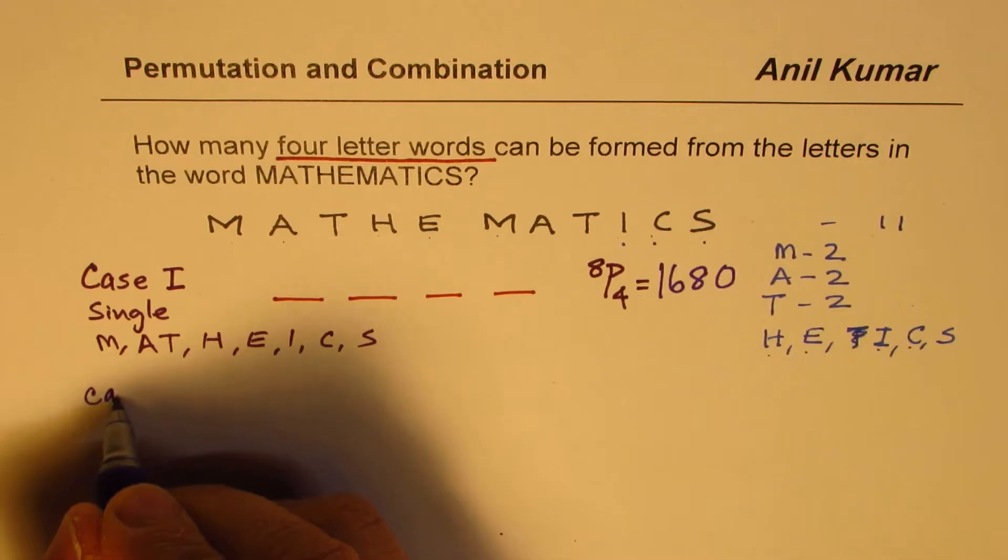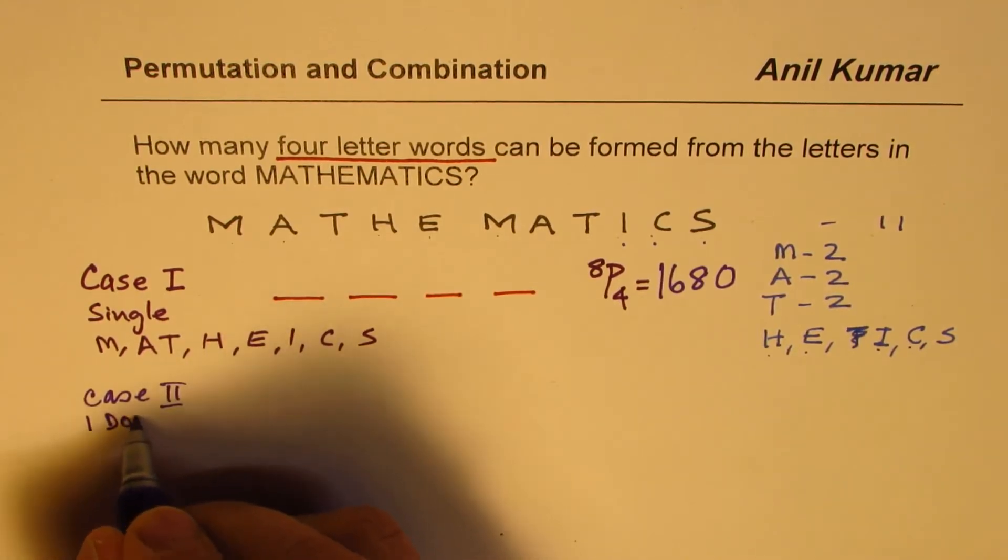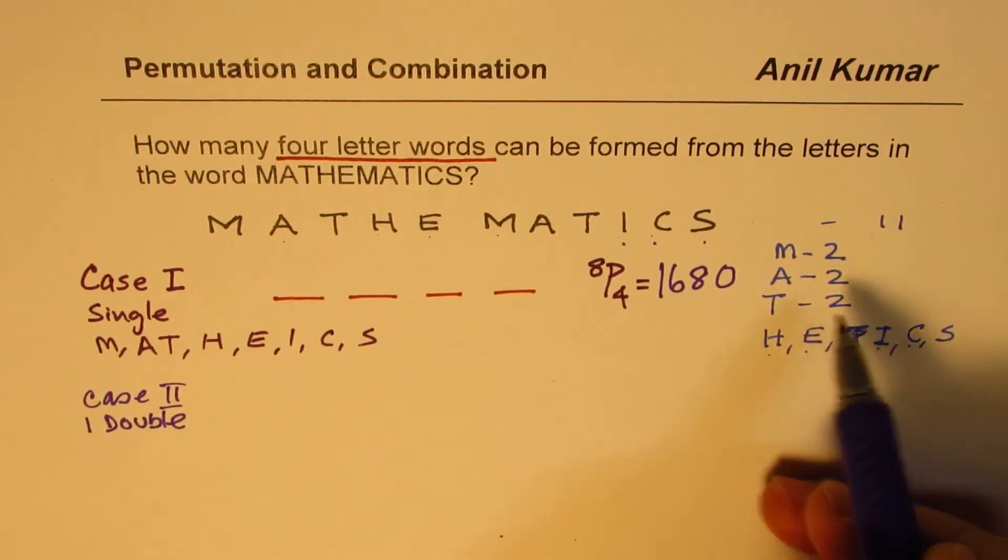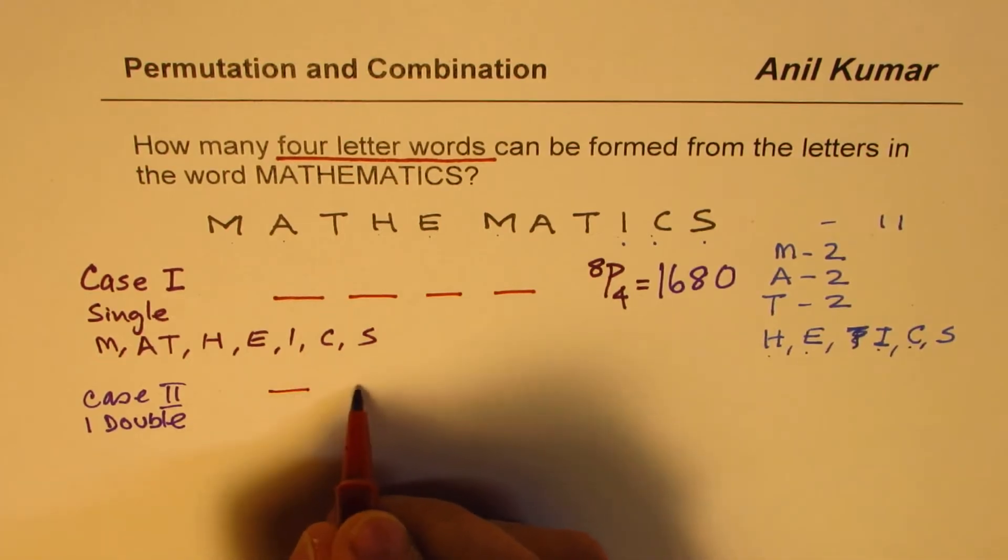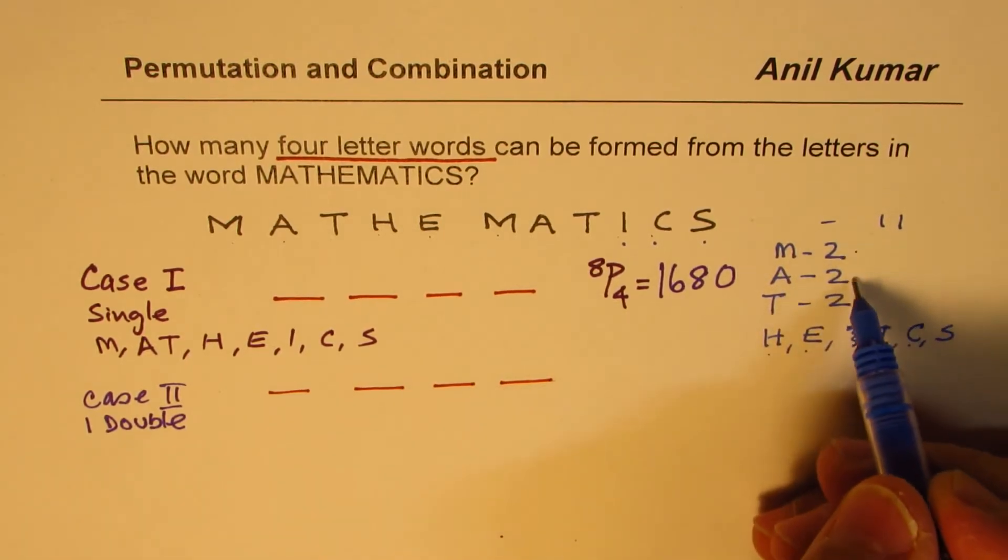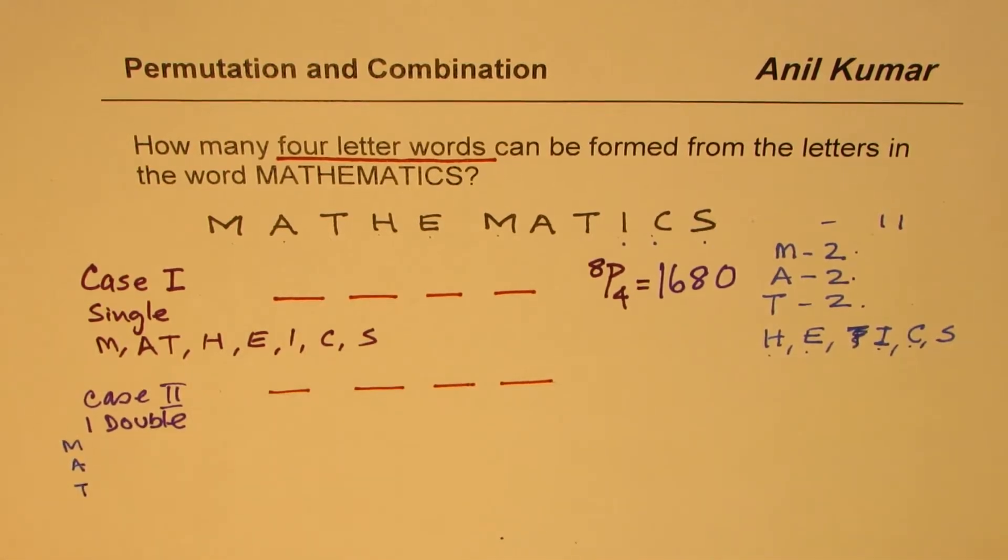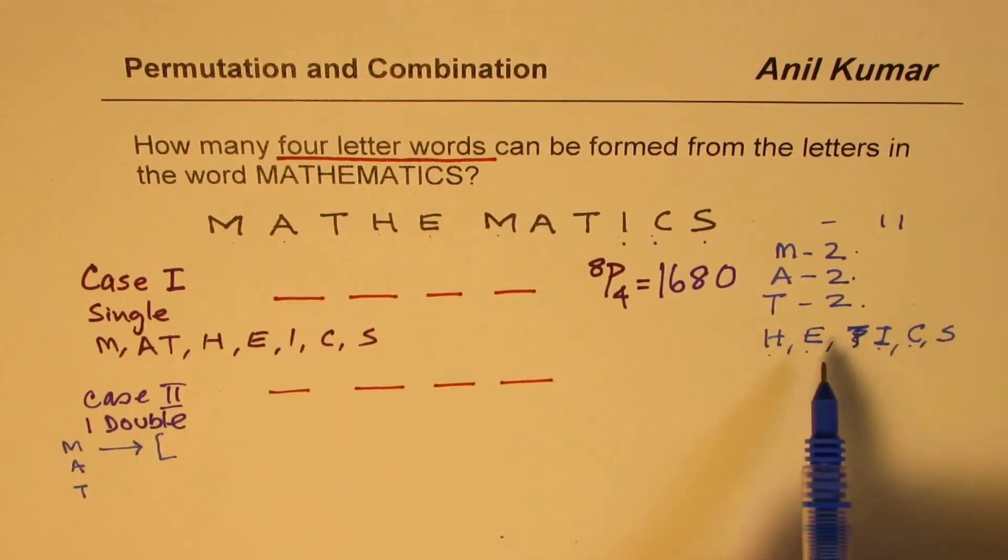Now let's do case two. Now in this case, we could have some doubles. So we have one double. So one double means we could either take M as a double, we could take A as a double or T as a double. So one double. So let's look into this combination of double and count how many we can have. So when we say one double, in that case we could have what combination? Let's choose M. So we could have any three of these. So we could have either M or we could have A or we could have T. So there are three which could have as a double.